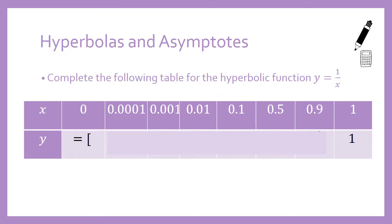So now I want you guys to complete the following table for the hyperbolic function y equals 1 divided by x. I've already filled in two answers for you. When x is 1, we do 1 divided by 1 and we get 1. That was pretty simple. But when we do 0, 1 divided by 0, we get undefined. I've done a sad face here to show that I'm sad that it's undefined.